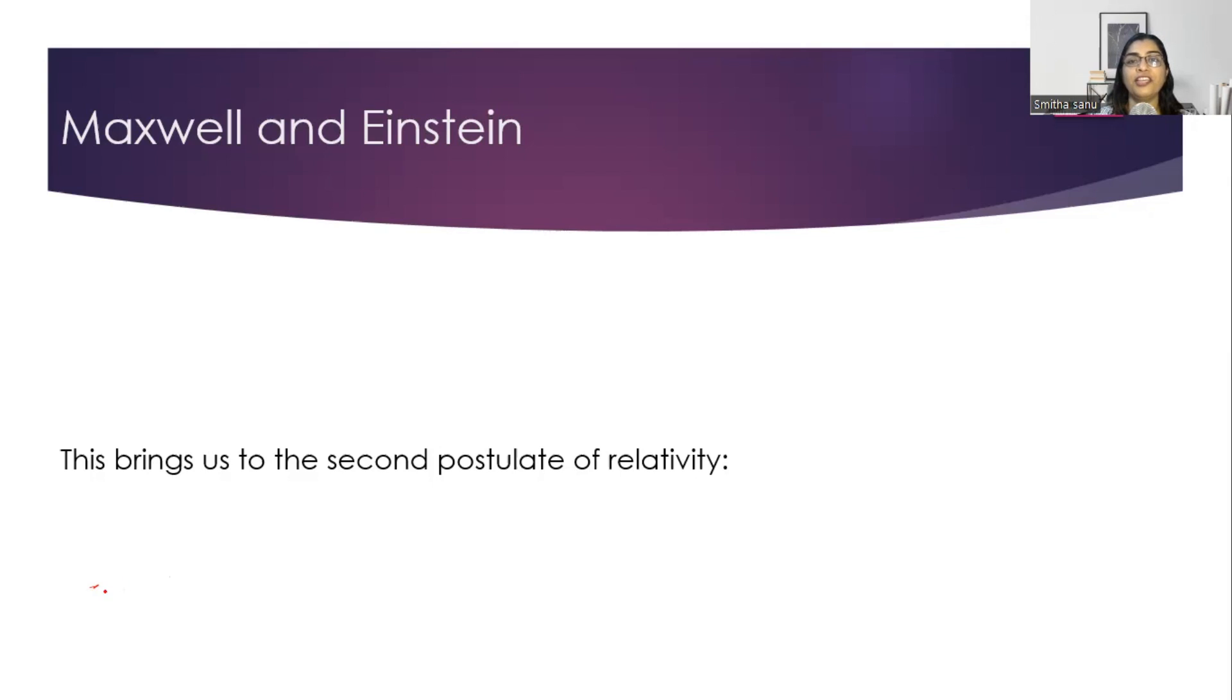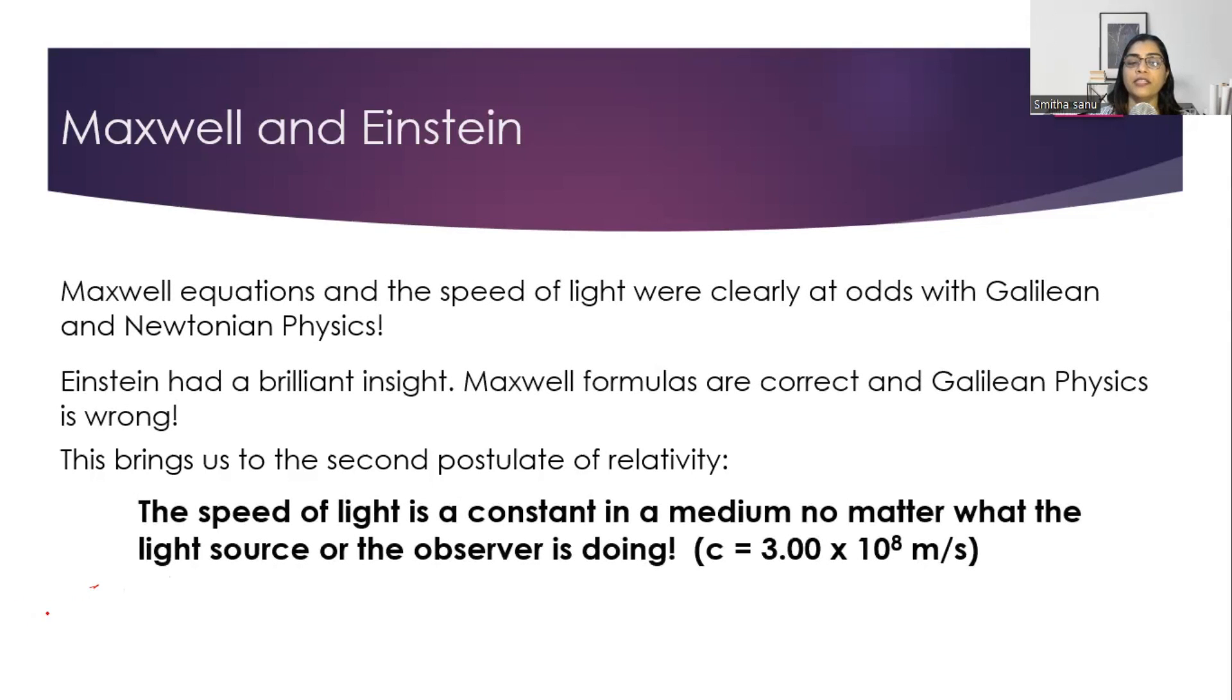And guess what? He came forward with the second option. He modified the Galilean transformation and gave a correction factor. And he came up with the second postulate of special theory of relativity, which is called constancy of the speed of light. Speed of light is going to be constant in a medium, no matter what the light source or the observer is doing. So, that's how he came up with two postulates of special theory of relativity.